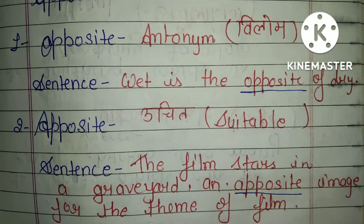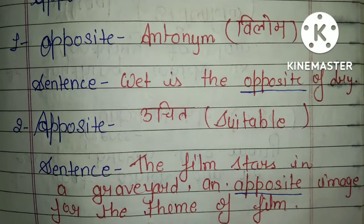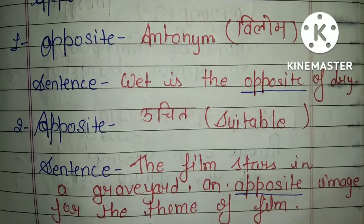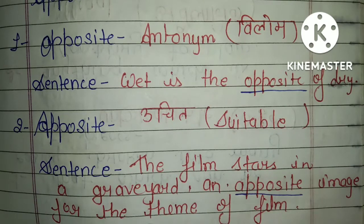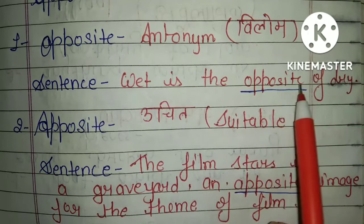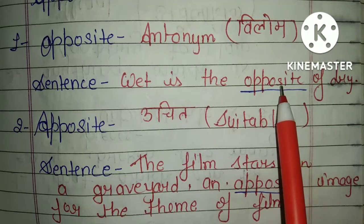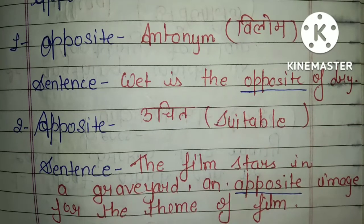Now let's see what the difference is between these two words. The first word is 'opposite'. Opposite का हिंदी में अर्थ होता है विलोम, and you can also use the word 'antonym' for it. For example, the sentence is: 'Wet is the opposite of dry' — meaning गीला, सूखे का opposite होता है। This 'opposite' is our first homophone word.